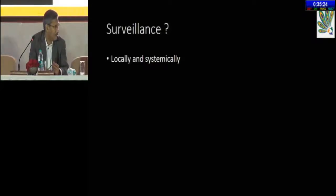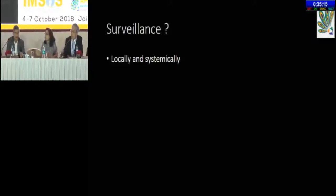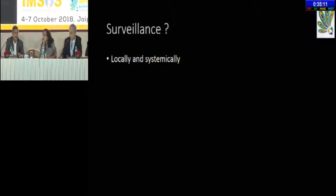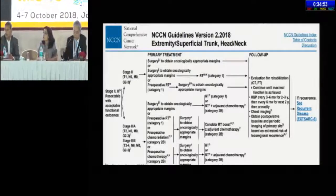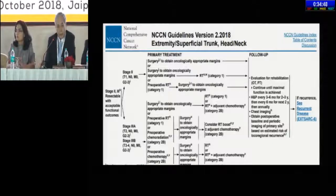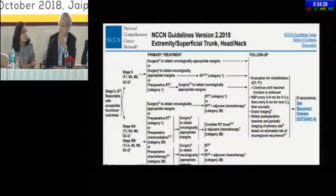Professor Chen: for high-grade sarcoma, routine follow-up is every three months in the first two years, every six months between two and five years, and every one year after five years — including chest CT and local MRI. For low-grade tumors, he switches to sonogram and chest X-ray. As Dr. Grimer mentioned, five years later there is still a 10% distant metastasis rate, so follow-up should be at least 10 years. Local recurrence usually occurs in the first three years, and distant metastasis in the first five years.